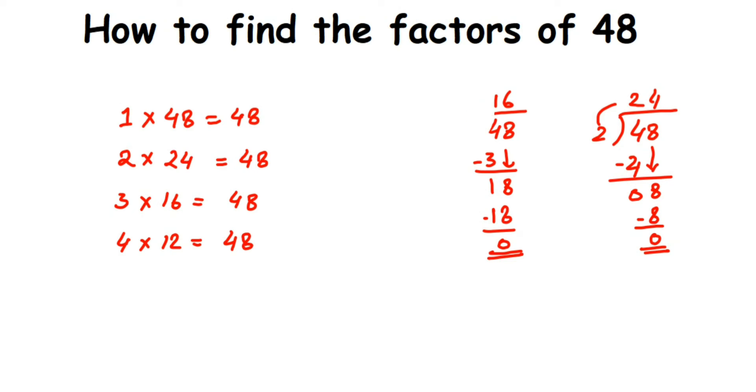It doesn't go in 5 table because in 5 table all the numbers end with 0 or 5. It goes in 6 table - 6 × 8 = 48. So we're going to write down 6 × 8 = 48.